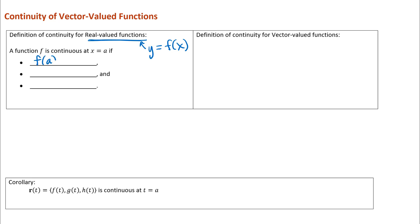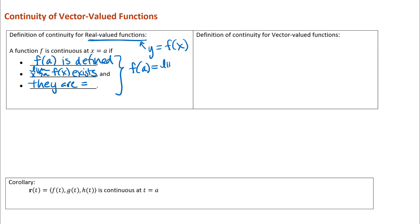First, the function output has to be defined — it exists. Second, the limit as x approaches a of f of x has to exist. And third, they have to be equal. We can write all three as one statement: f of a equals the limit as x approaches a of f of x. That statement implies the function output exists, the limit exists, and they are equal — though it's important to understand there are really three things being said.